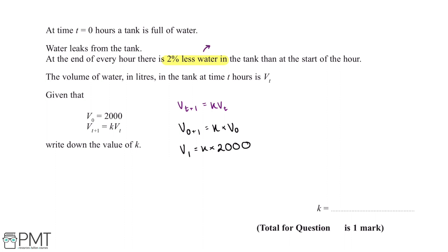And 2% less can be worked out by multiplying a number by 0.98. So what this means is that our value for K will be 0.98 because if we multiply 2000 by 0.98 this will give us a 2% decrease and therefore give us the value for V1.